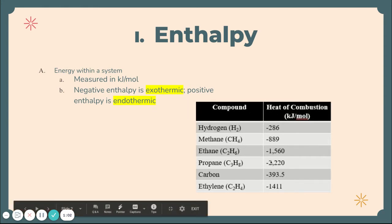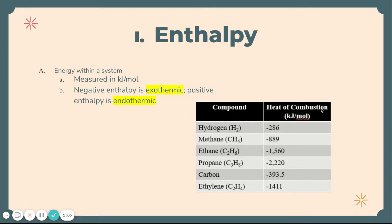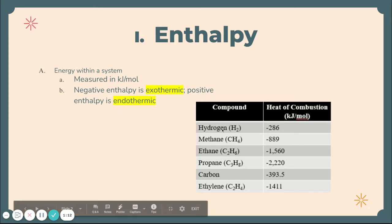An example in this table here: we already talked about combustion and how it's an exothermic reaction. You can see the heat of combustion for all of these different compounds and molecules — they're all negative. That's because energy is leaving all of those systems. These are all exothermic reactions, which we already knew about combustion.